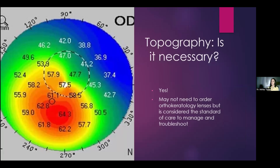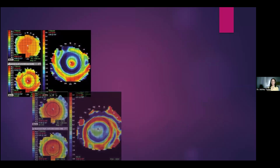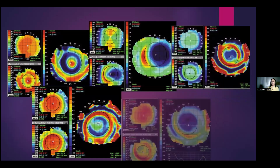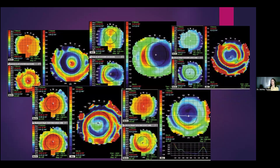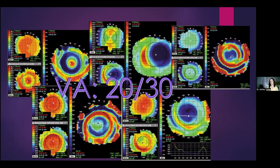Here are all different types of topography maps you could possibly see post ortho-K: decentered lenses, central islands, incomplete treatment — but every single one of these patients had 20/30 acuity. You have no idea what you're troubleshooting if you don't have an accurate map. If you're starting a myopia management practice and don't know what equipment to get, really consider getting a combination piece of equipment that does axial length, topography, and pupil assessment — this saves time, space, and money instead of having individual instruments.